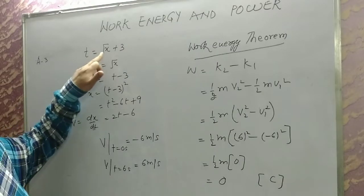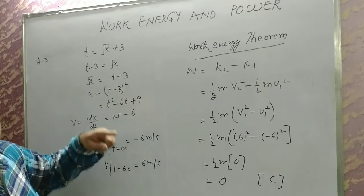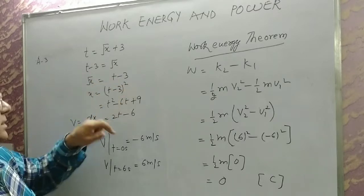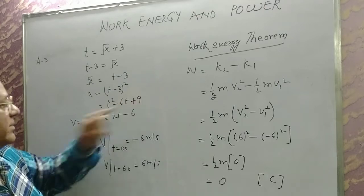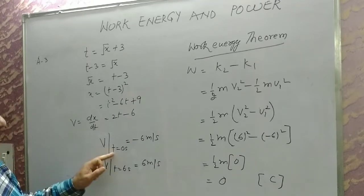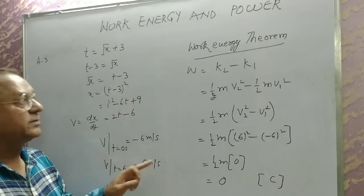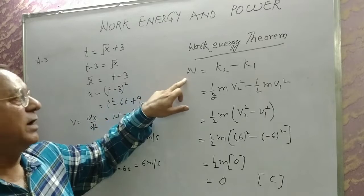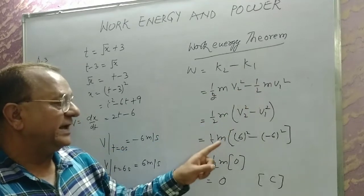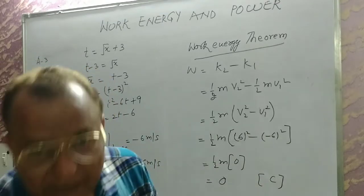In question three, you are given t = √x + 3. In this form the question cannot be solved, so rearrange: √x = t − 3, therefore x = (t−3)² = t² − 6t + 9. Velocity v = dx/dt = 2t − 6. At t = 0, v = −6 m/s; at t = 6 s, v = 6 m/s. Work done by work-energy theorem = ΔKE = ½m(v₂² − v₁²) = ½m(36 − 36) = 0. Answer is 0.